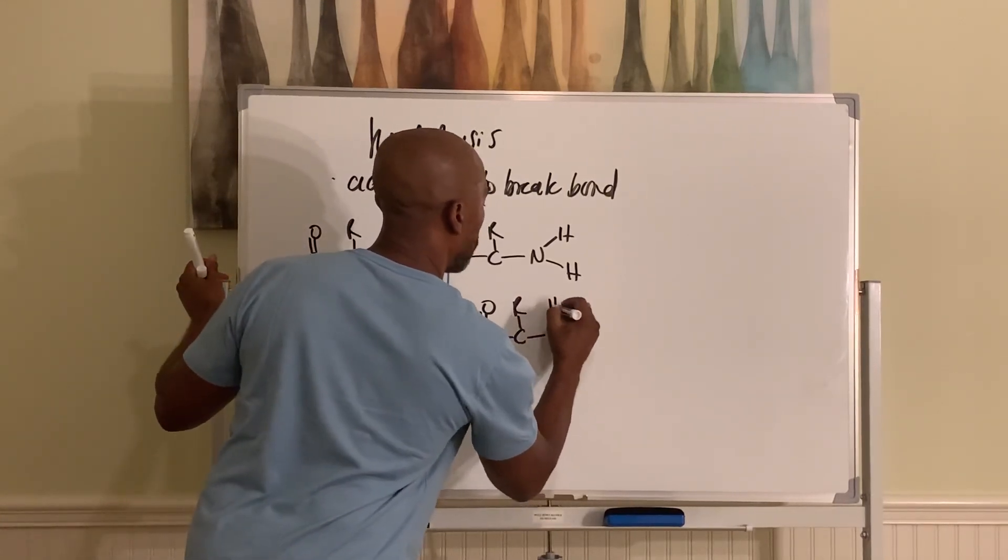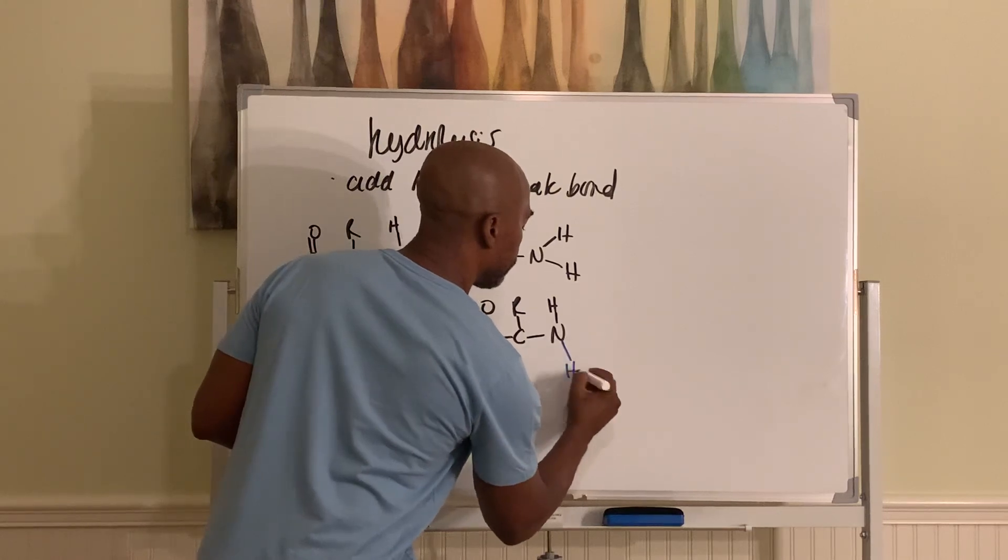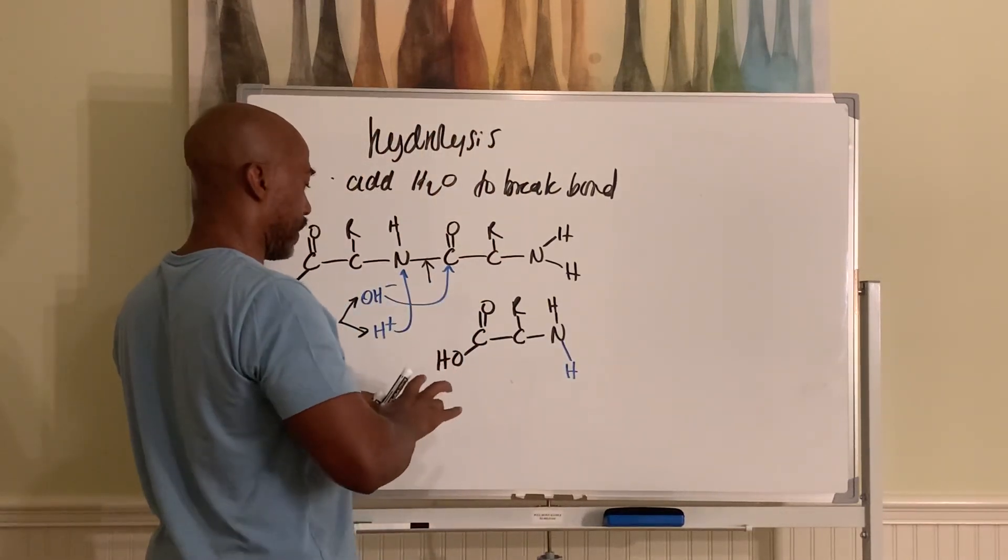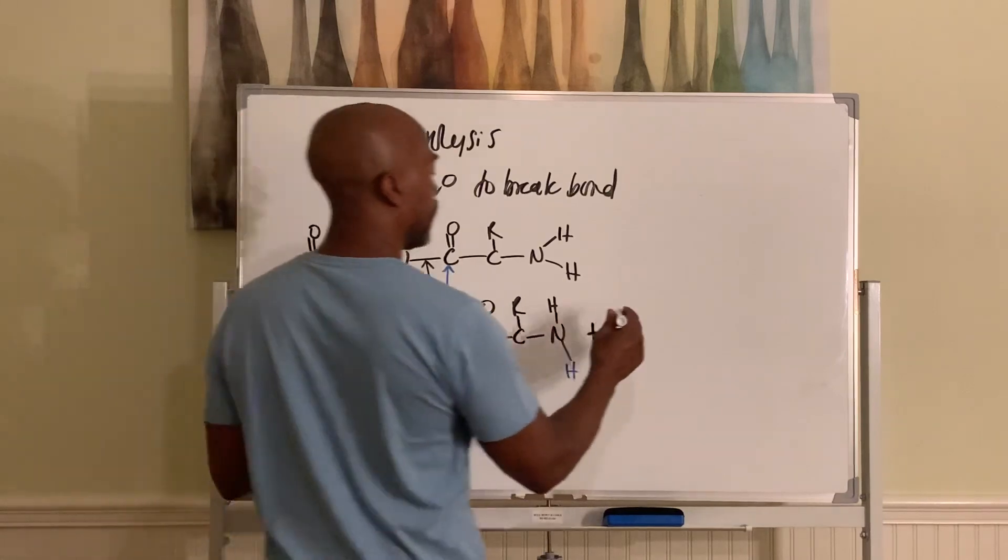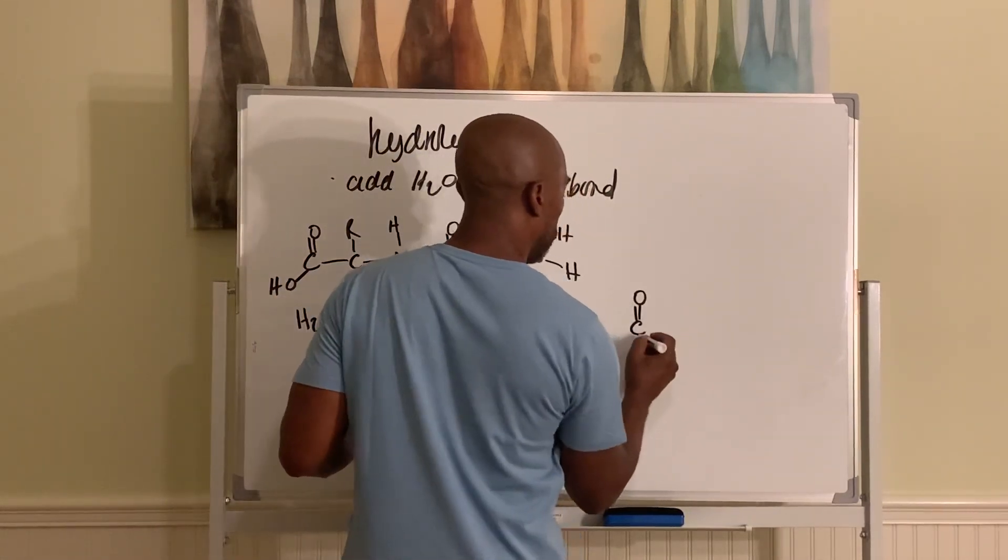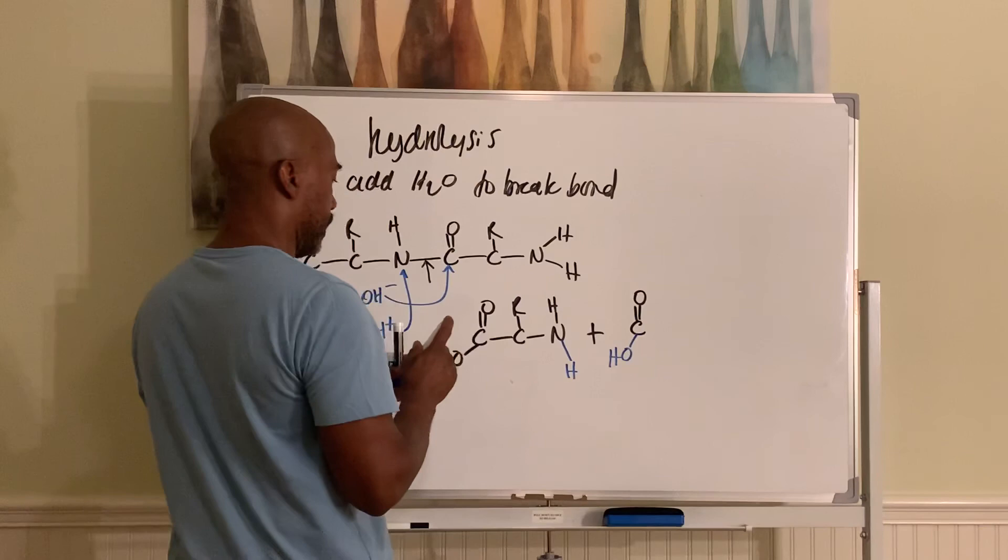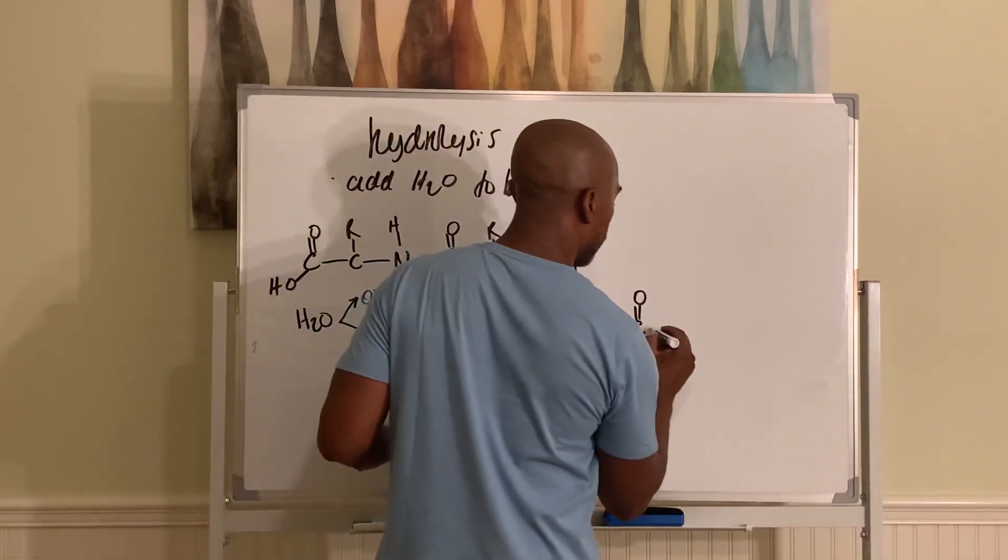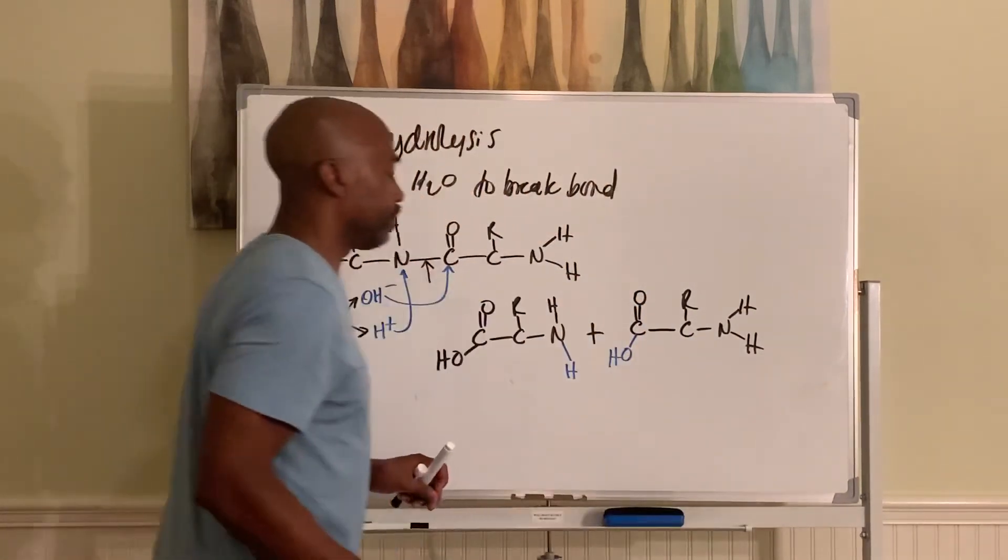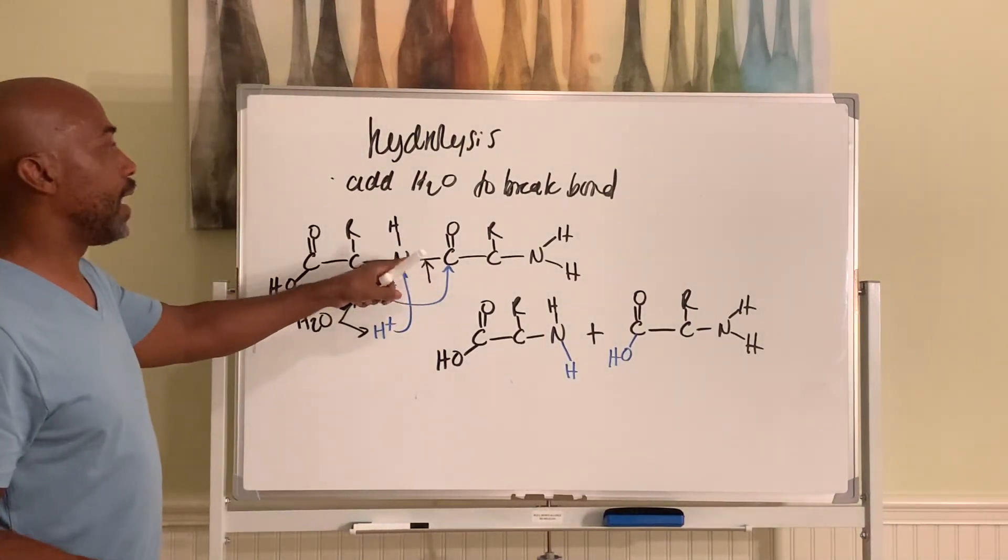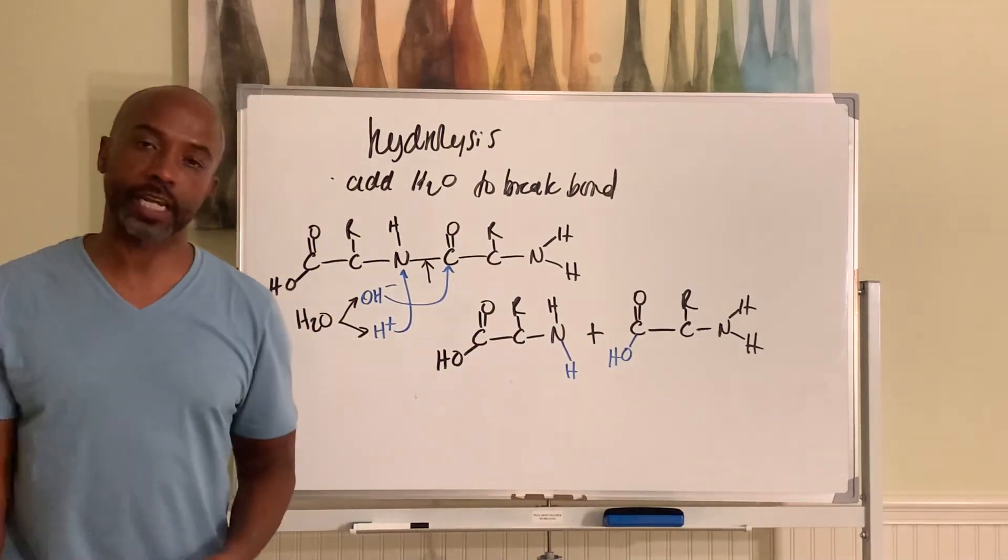This amino group will pick up a hydrogen from the water. So, now it's happy and more stable, and then the other part of it, the carboxyl group, will pick up the OH to form a stable amino acid, or a stable molecule. And there you go. You have broken the bond by adding water to the reactants. That's called hydrolysis reaction. Okay, we'll pause there.